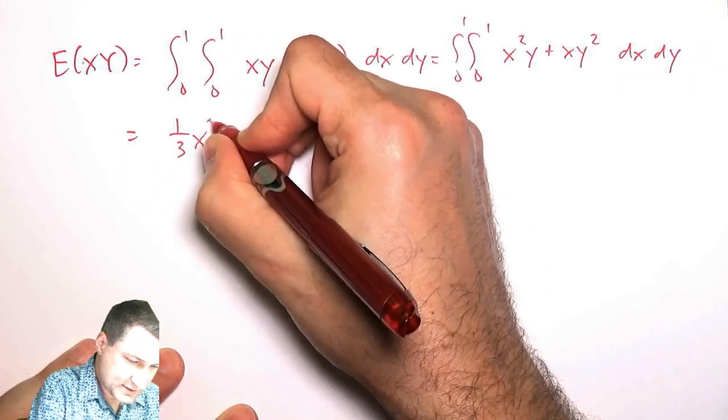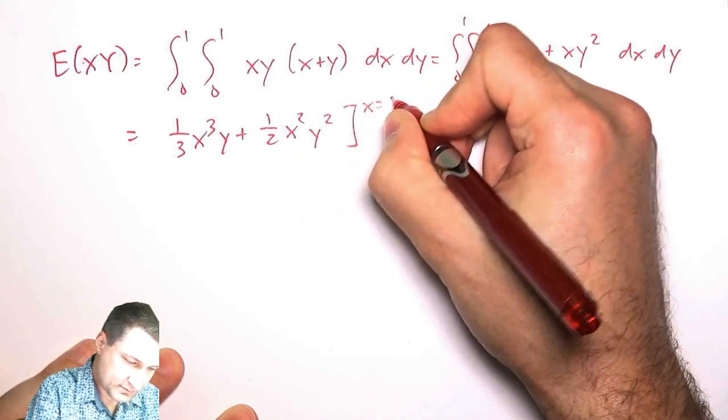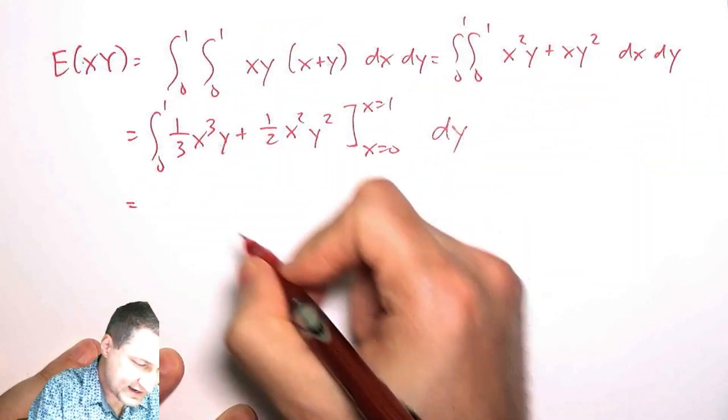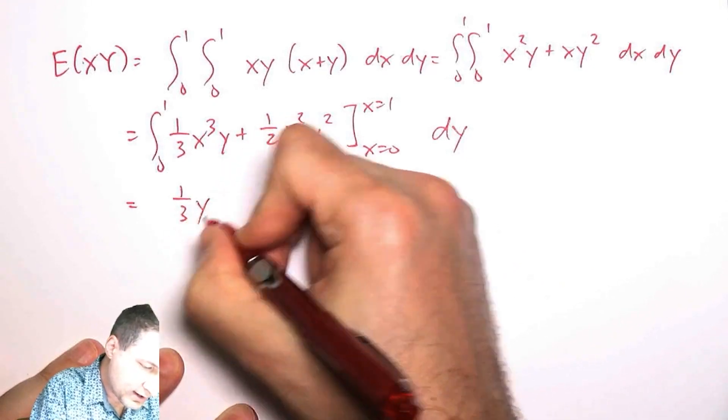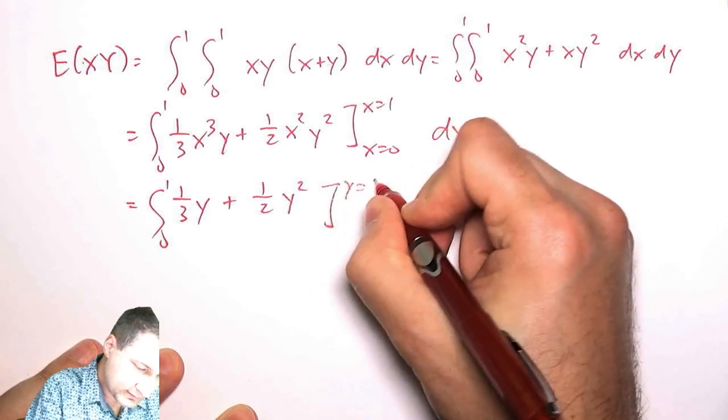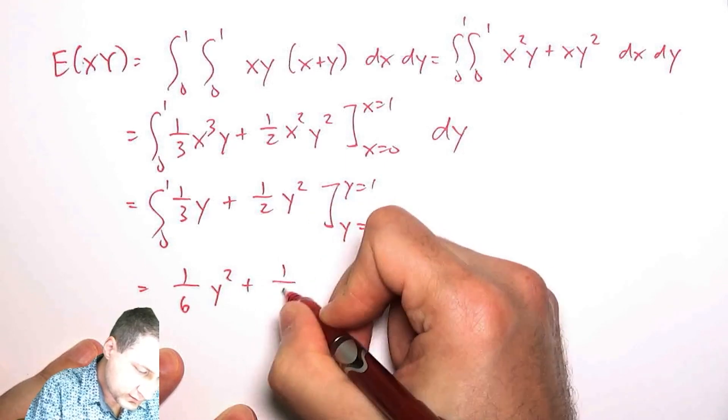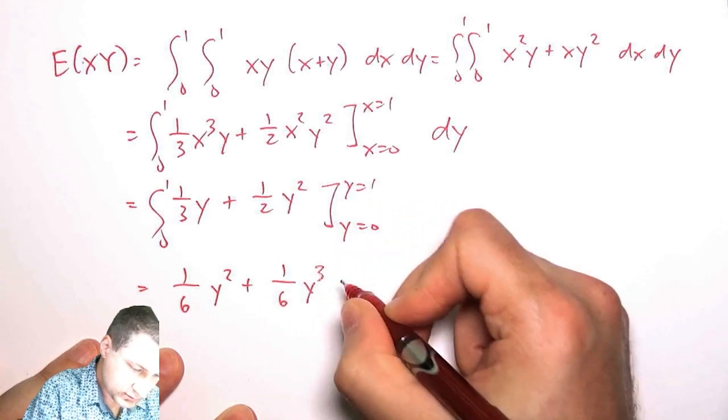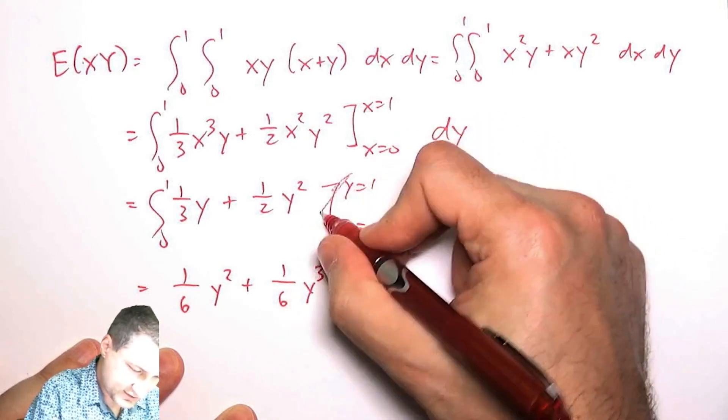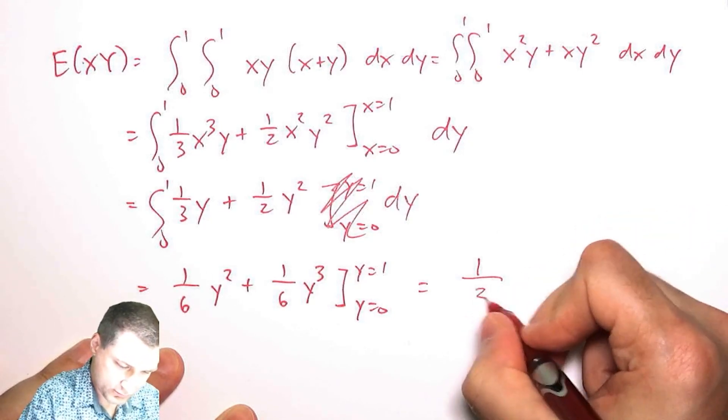Again, you could use WolframAlpha to do this, but honestly, by the time I type this in, it'll be just faster to do it this way. So I have one third Y plus one half Y squared. How fast can you integrate? It's amazing. Hopefully I'm not making any mistakes. Actually, this is like a DY here. So I should get one third.